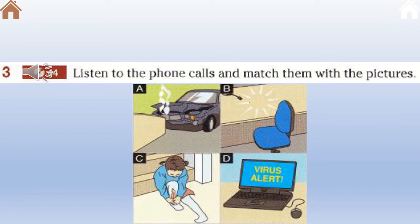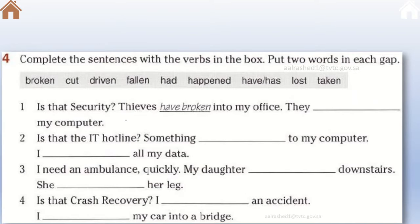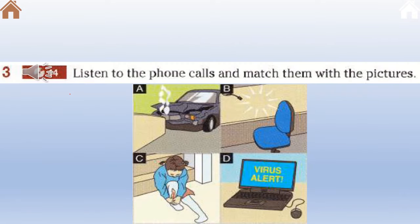For number three, we need to listen to four phone calls and match them with pictures. For each call, it will tell you about the story and you need to write the number down. For example, if it talks about a car accident, that means picture A — put number one. If there is a cat or a leg is mentioned, choose C. If there is a virus attacking the computer, put B. If there is something about electricity or a chair, put B.